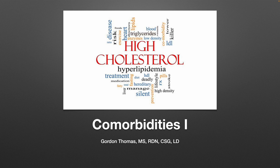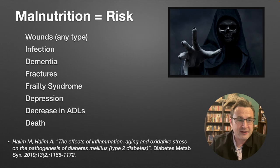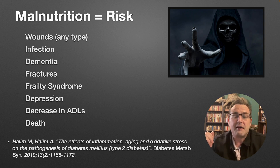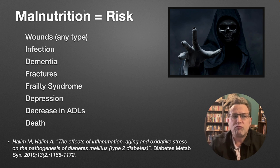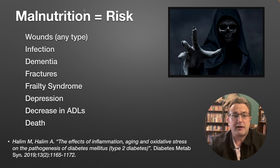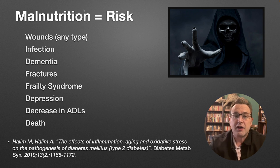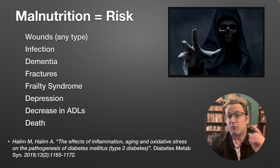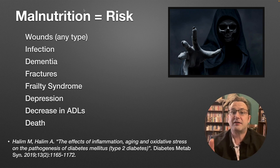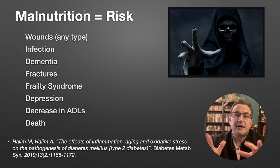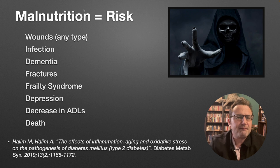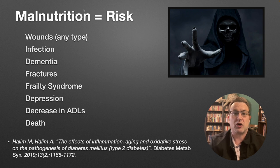Hello everybody and welcome to Comorbidities 1 in Unit 2. We're going to start off by reviewing malnutrition and the risks entailed. Malnutrition increases the risk of everything: wounds of any type, infection, it appears to have a link to increased risk of dementia, increased risk of fractures, frailty syndrome, depression, decrease in ADLs, and of course death if things go really poorly.